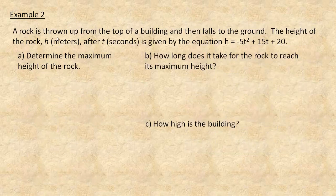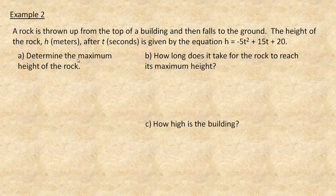In example 2, we have a rock thrown up from the top of a building that then falls to the ground. The height h in meters after t seconds is given by: h = −5t² + 15t + 20. We're asked three questions. First, determine the maximum height of the rock. The maximum height occurs at the vertex, so we want to find the vertex — just like in example 1. We'll complete the square, so the first thing is to factor the negative 5 out of the terms that have t's — not the 20.